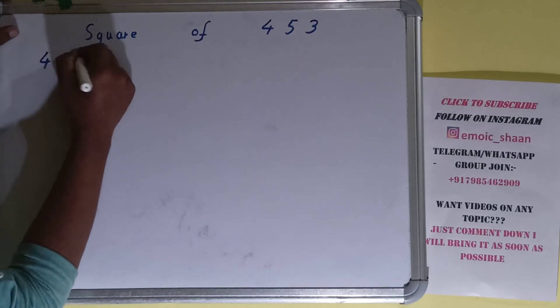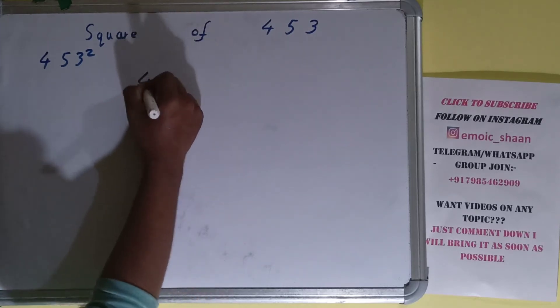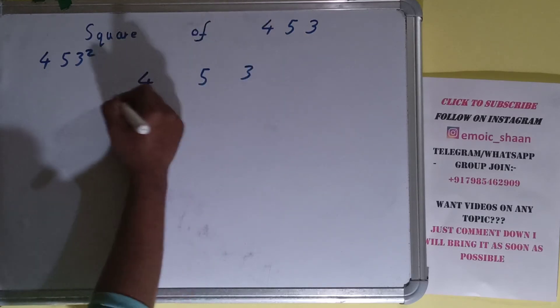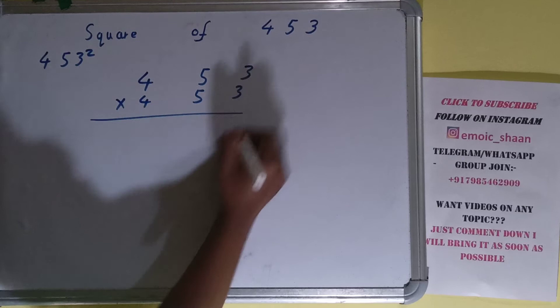Okay, now moving on to the solution. Square basically means multiplying the number by itself. And the number here is 453. To find square of it, we need to multiply by itself, that is 453, and do the multiplication.